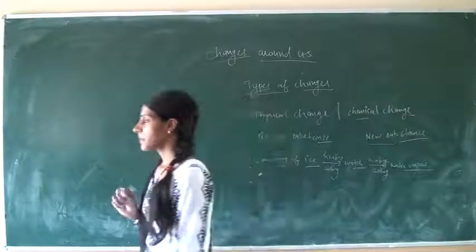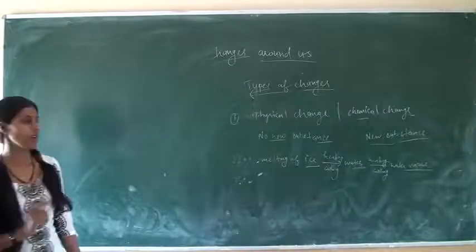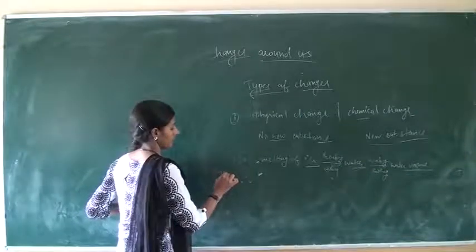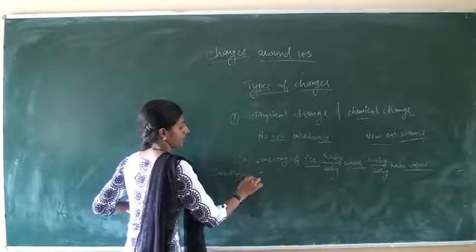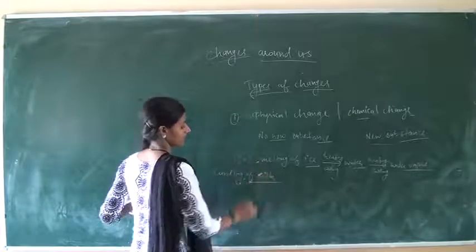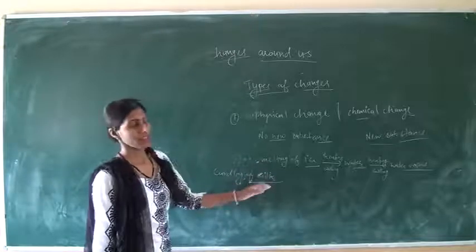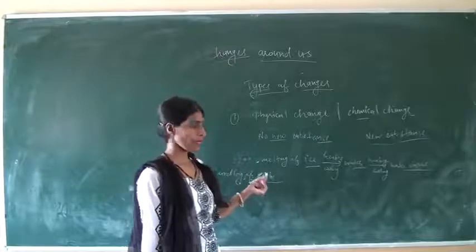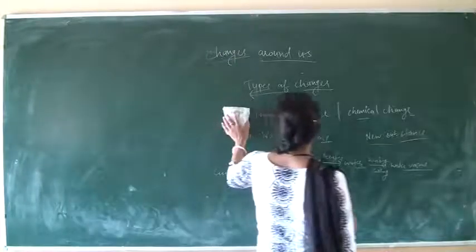In chemical changes, examples include burning of paper, burning of wood, and curdling of milk. These are examples of chemical changes in which a new substance is formed. This is our first type of change.